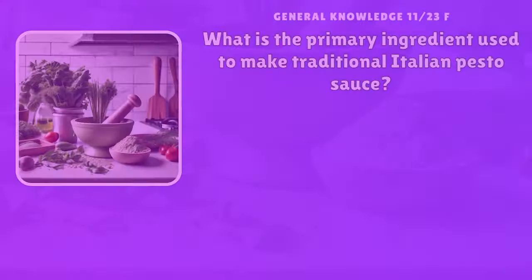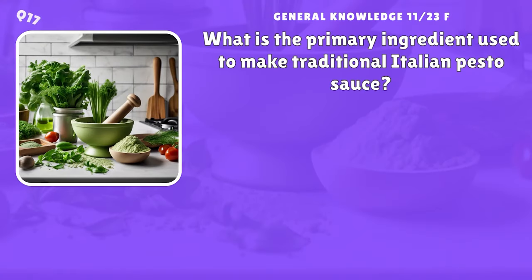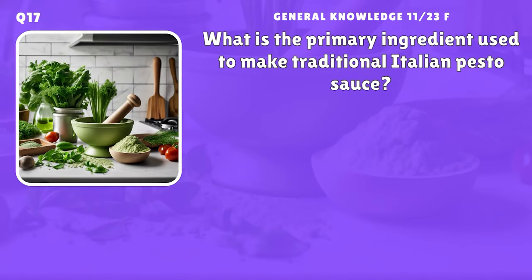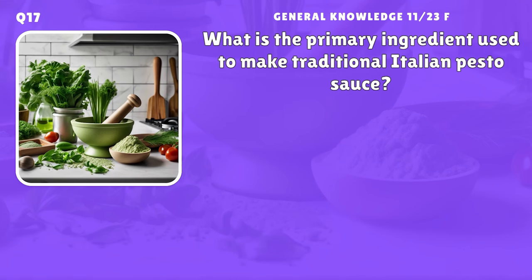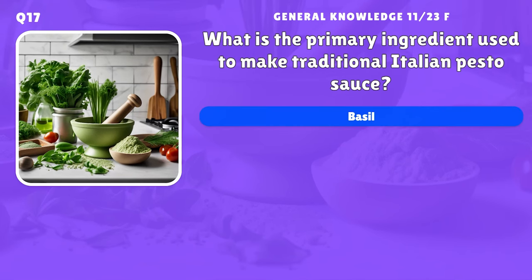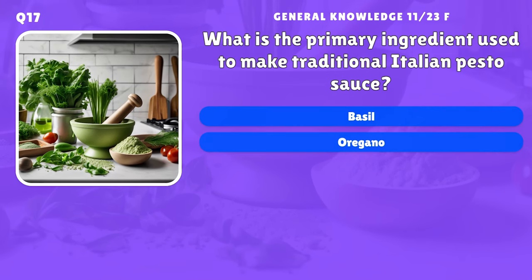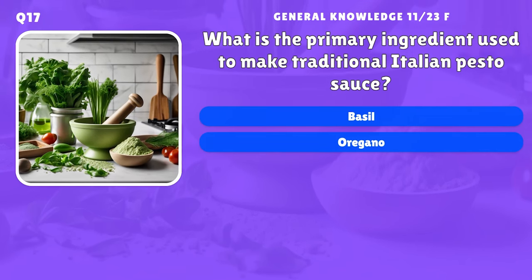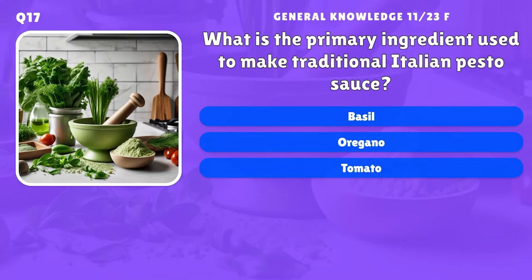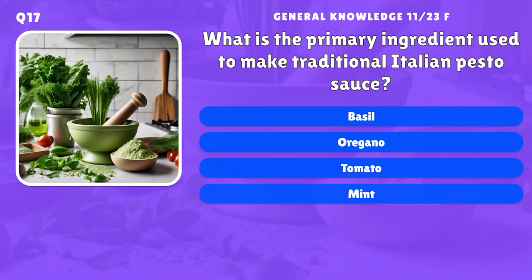What is the primary ingredient used to make traditional Italian pesto sauce? A) Basil, B) Oregano, C) Mint.